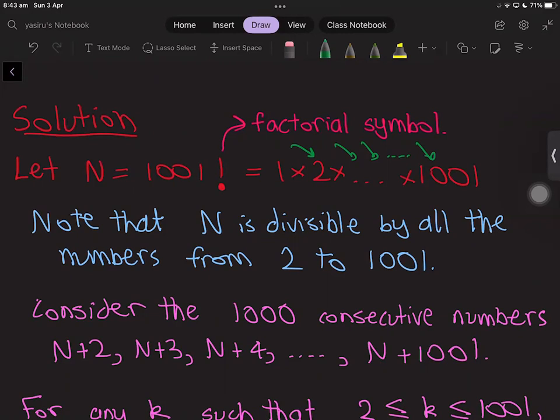Consider the 1000 consecutive numbers N+2, N+3, N+4, and so on up to N+1001.